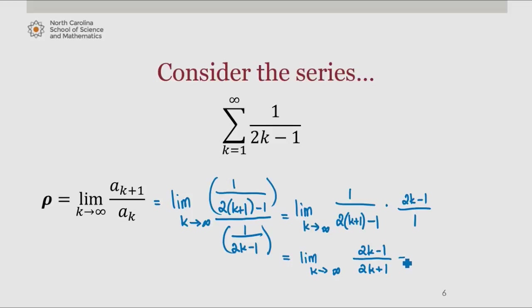Using different methods — such as L'Hôpital's rule or just looking at the long-term behavior — 2k minus 1 over 2k plus 1 is actually equal to 1. So with this series, we do not get a conclusion using the ratio test and would have to use another test. In this case, the integral test would probably be a good choice.